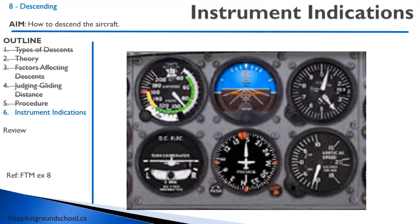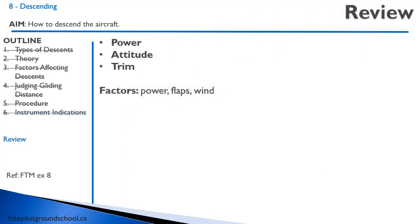Let's look at some instrument indications during a descent. Airspeed can be anywhere — if power is left on it may be faster than cruise, or slower if coming in for landing. The attitude indicator shows nose down, the altimeter is decreasing, and the vertical speed indicator in the bottom right shows a descent.